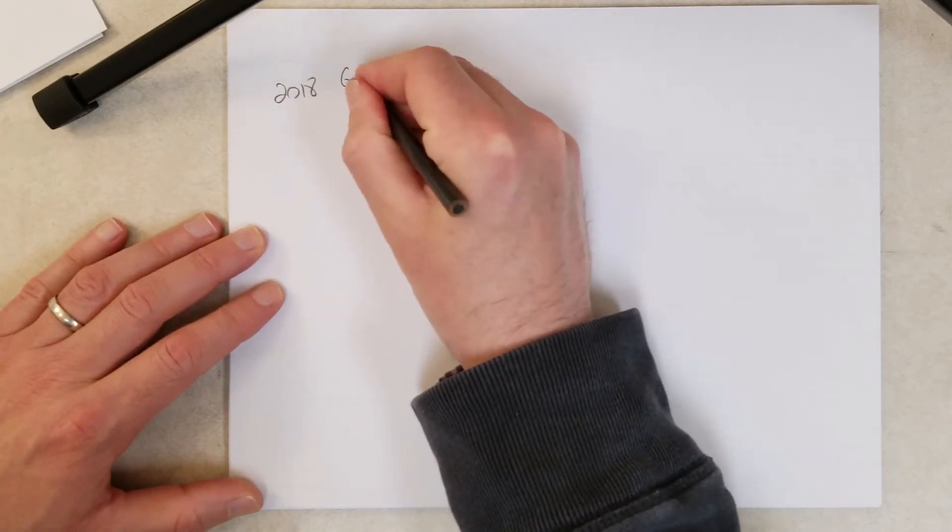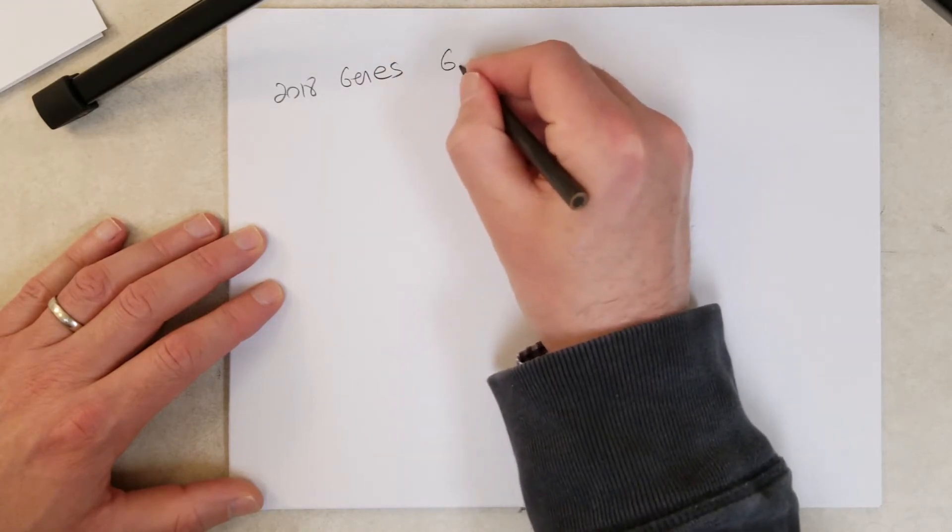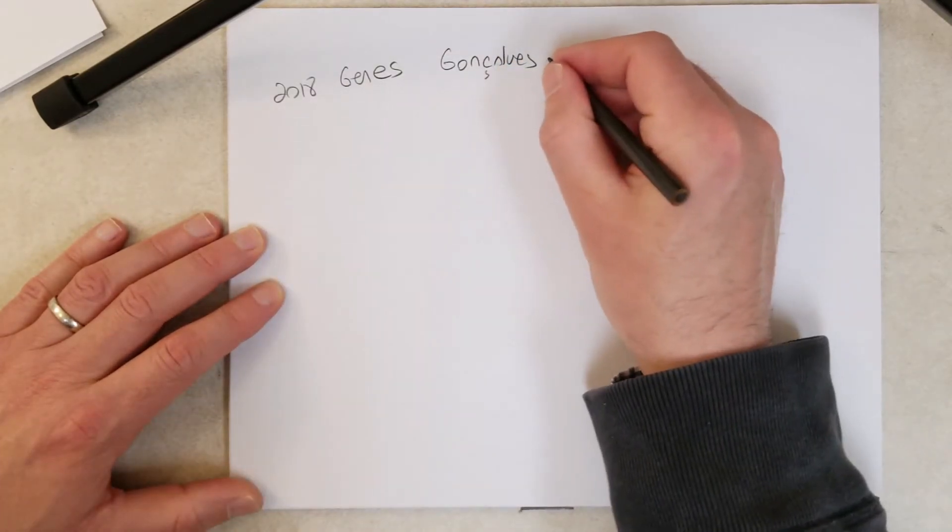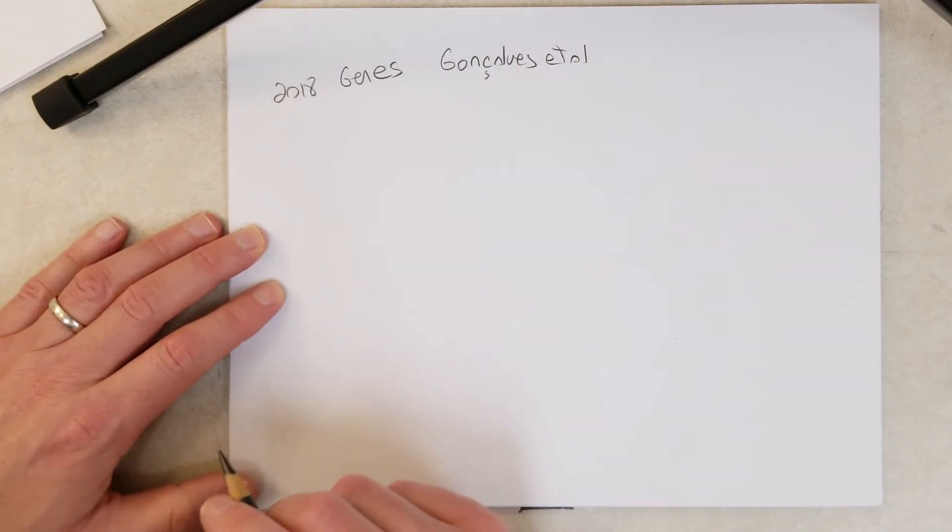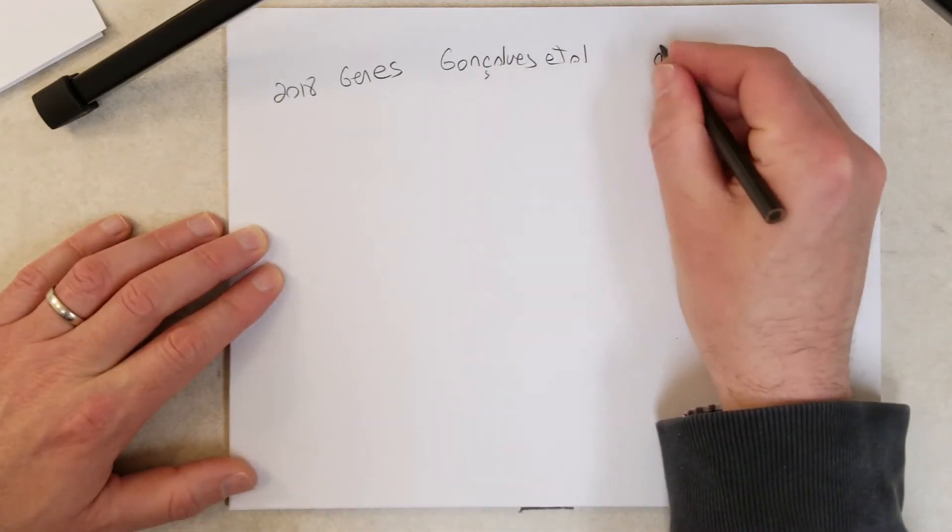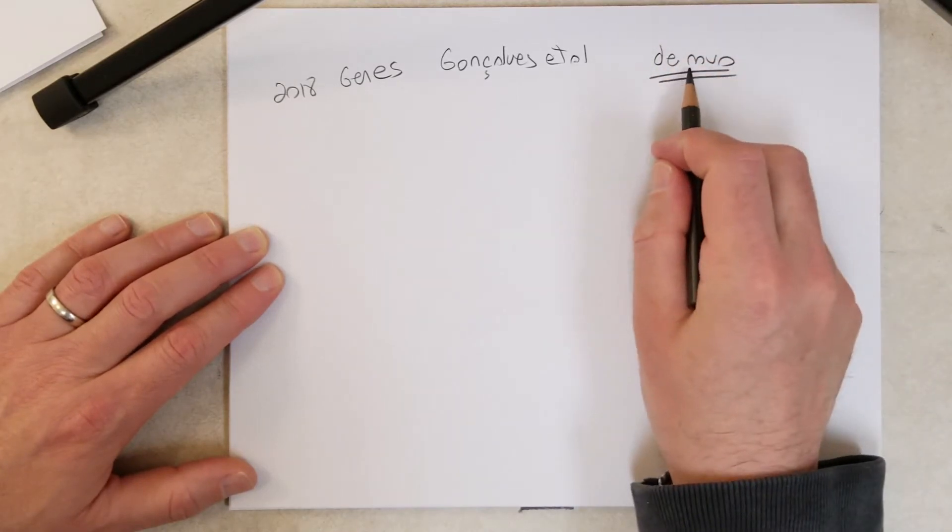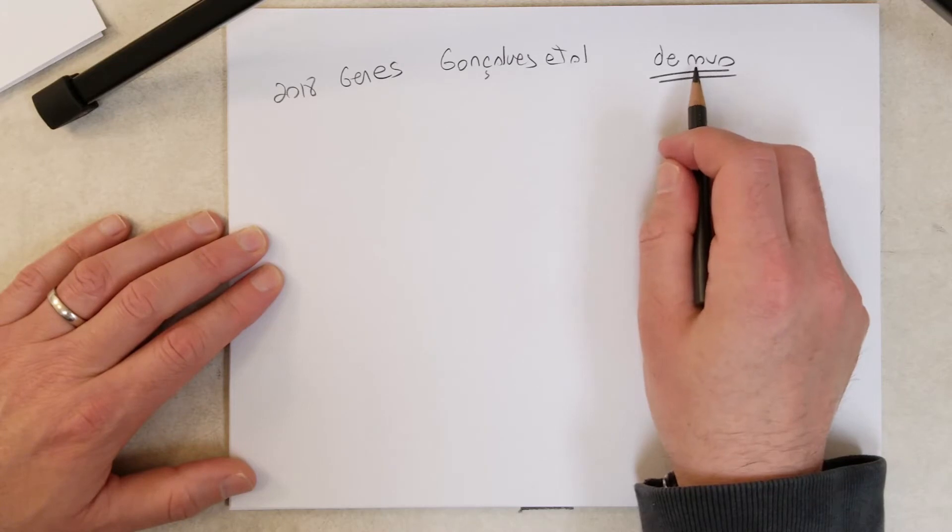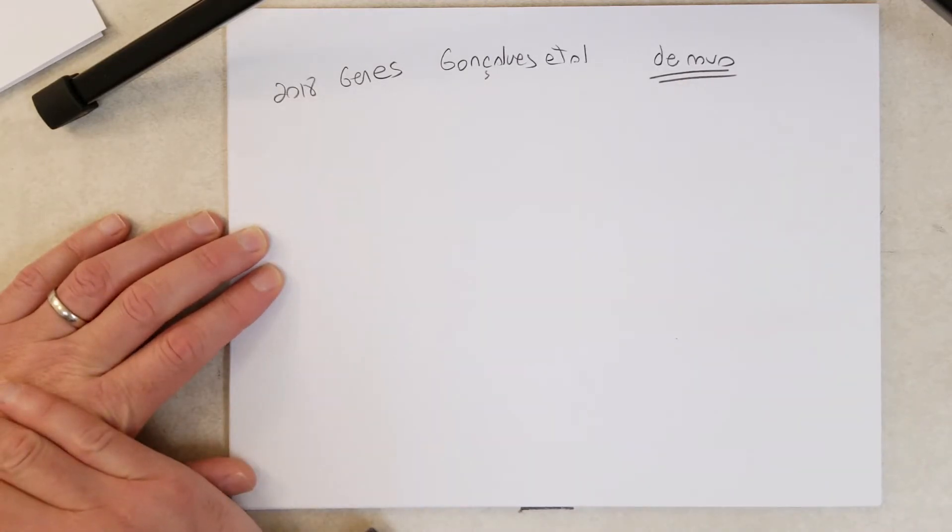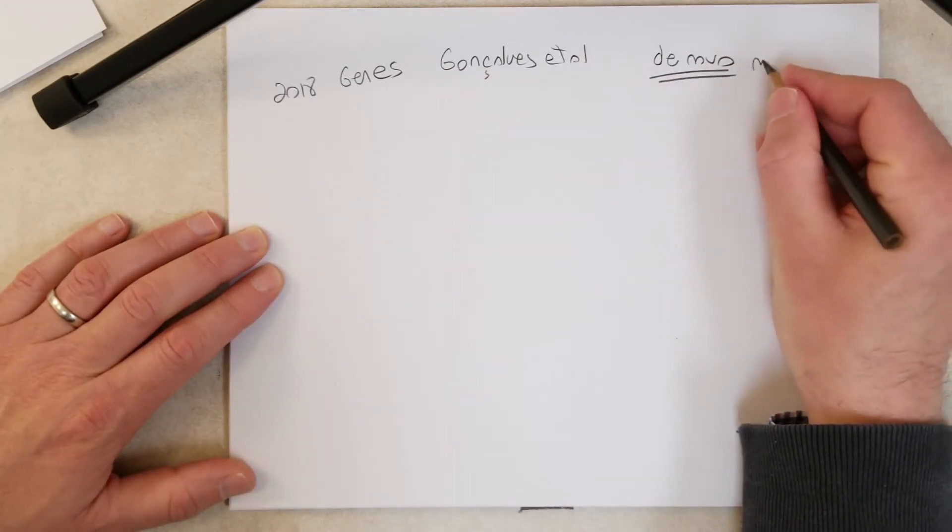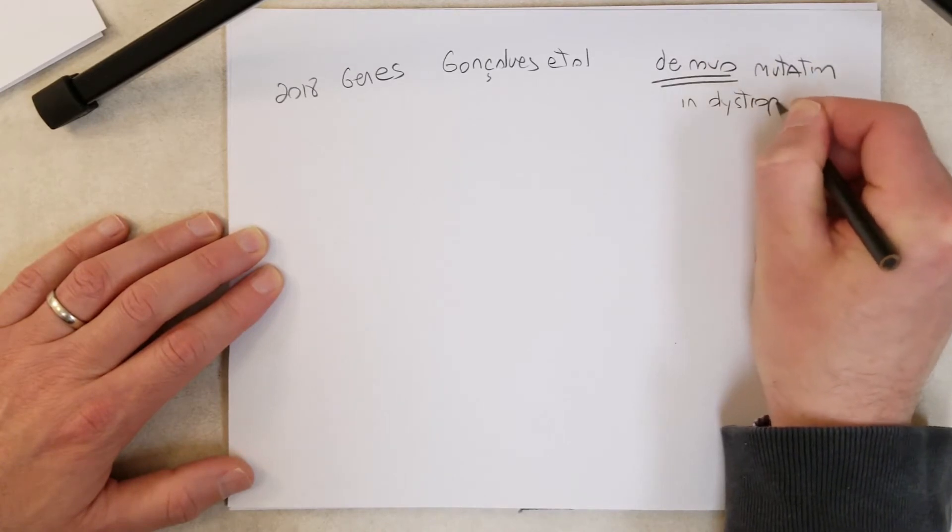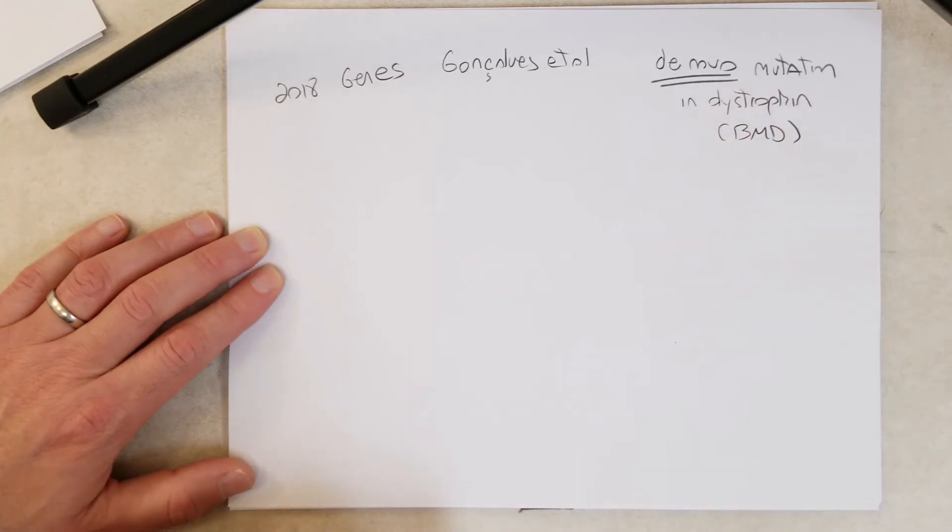So in 2018, there was an article in the journal Genes. The first author was Goncalves et al. 2018 in genes. Essentially they characterize a de novo mutation in the dystrophin gene. So what does de novo mean? They think the mutation happened in the maternal germline, possibly during oogenesis. The mutation happened in the dystrophin allele, and that was the allele inherited by the patient who had Becker's muscular dystrophy. So the patient has BMD. De novo mutation in dystrophin leads to BMD in this study.